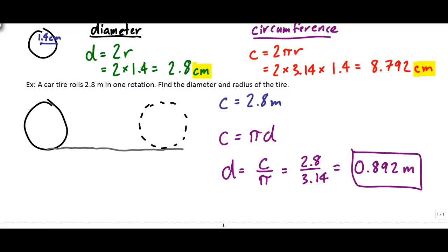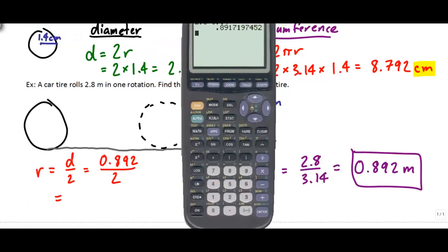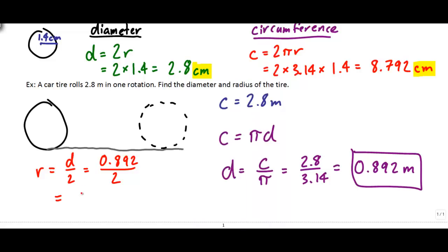Now we found the diameter, but we still have to find the radius. And you remember from last day, the formula said the radius is equal to the diameter divided by 2. So that's 0.892 divided by 2, which is 0.446. And my units for this question, I can always go back and look at the question. The units are meters. Alright, that's it for 4.2. Don't forget to do the recap.